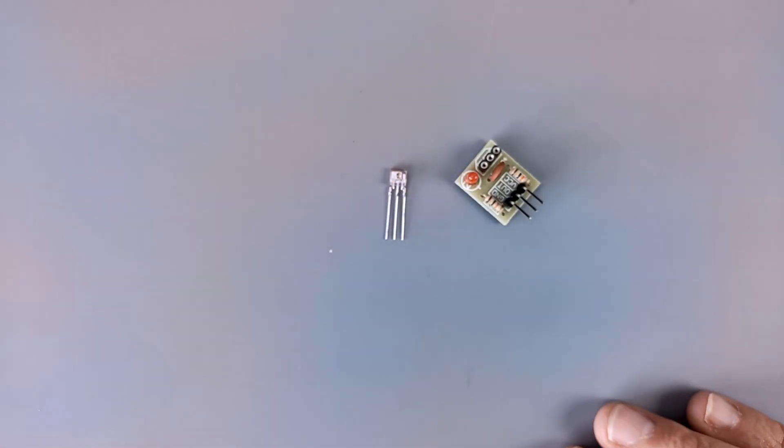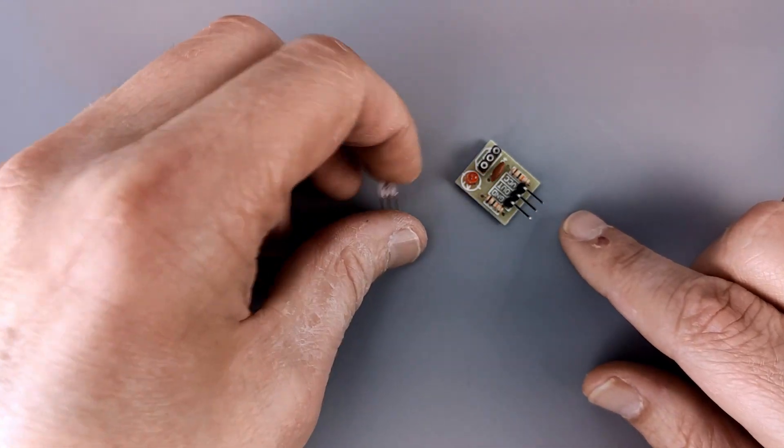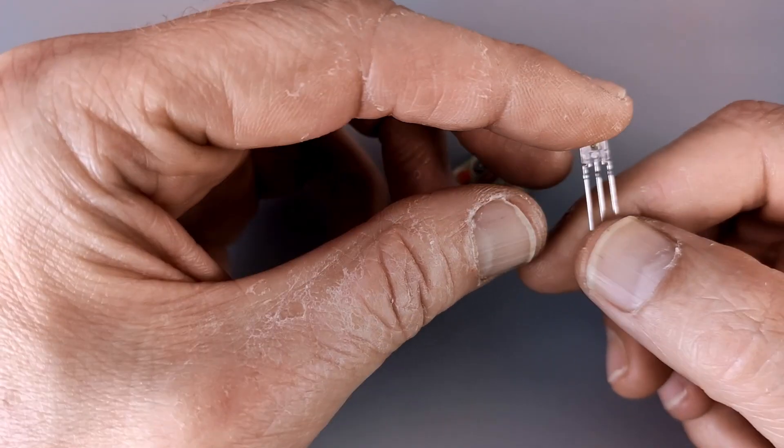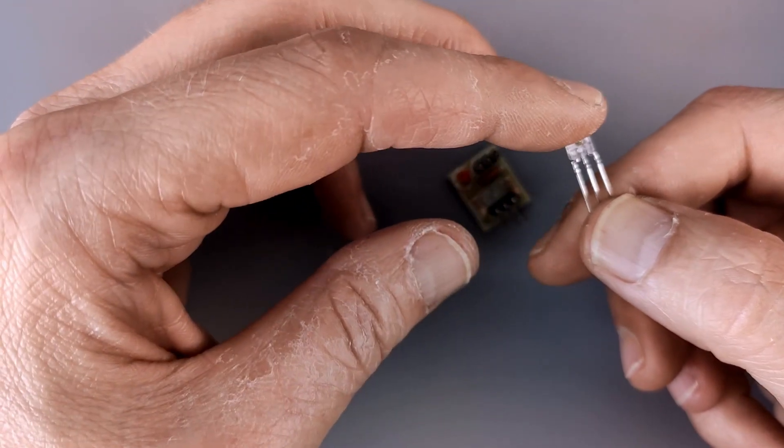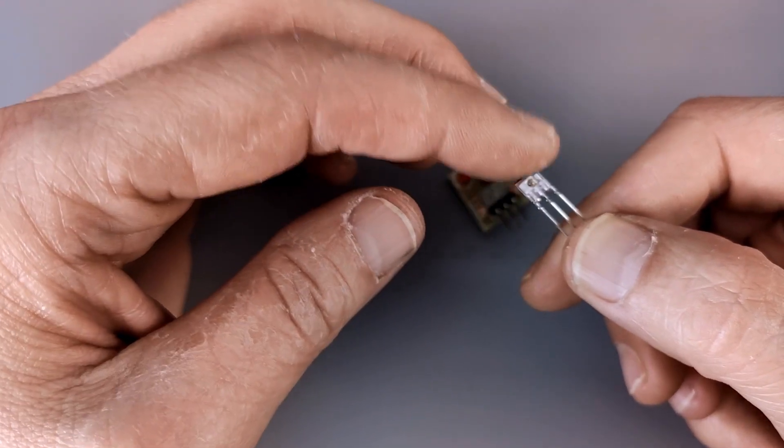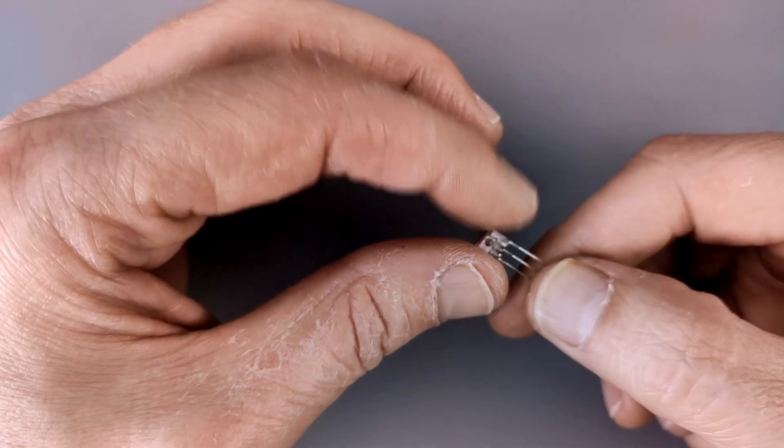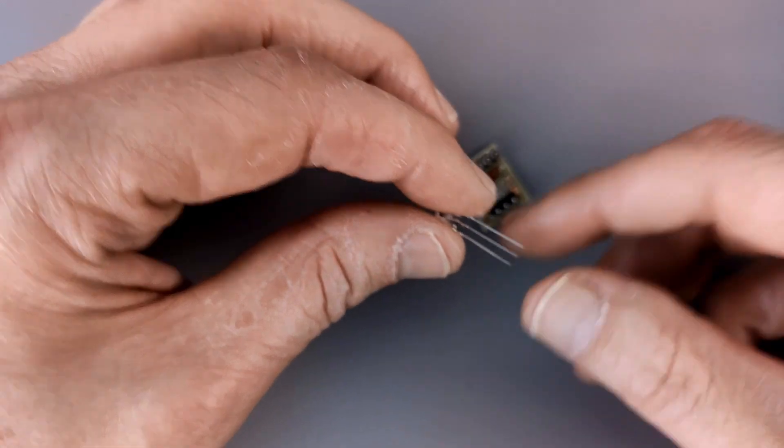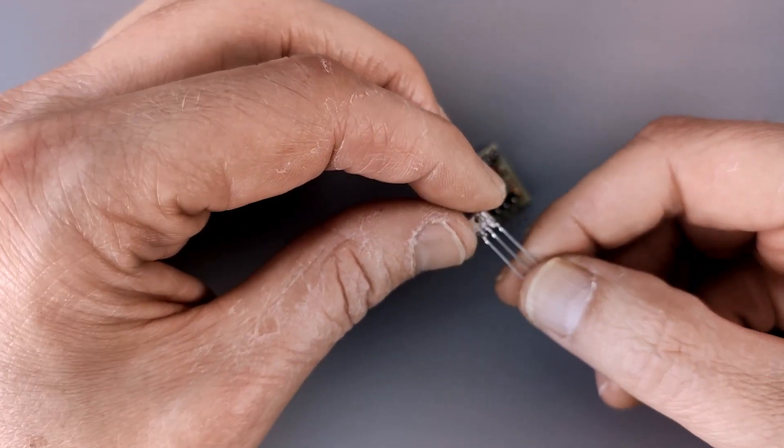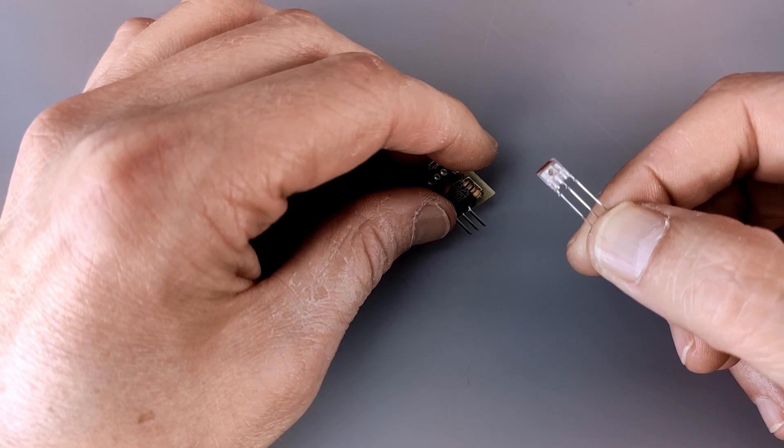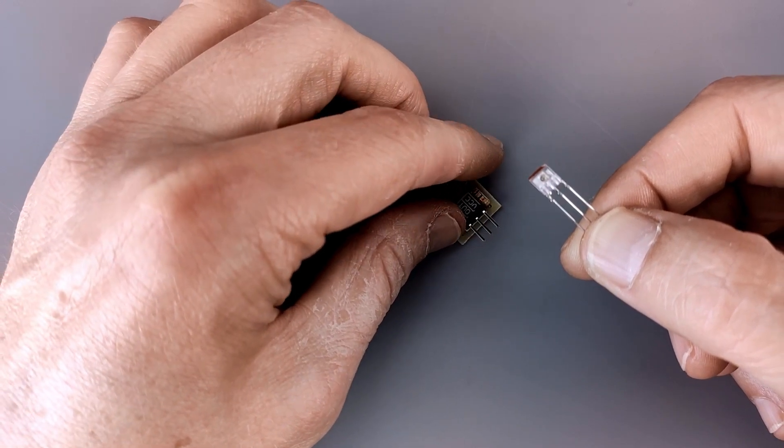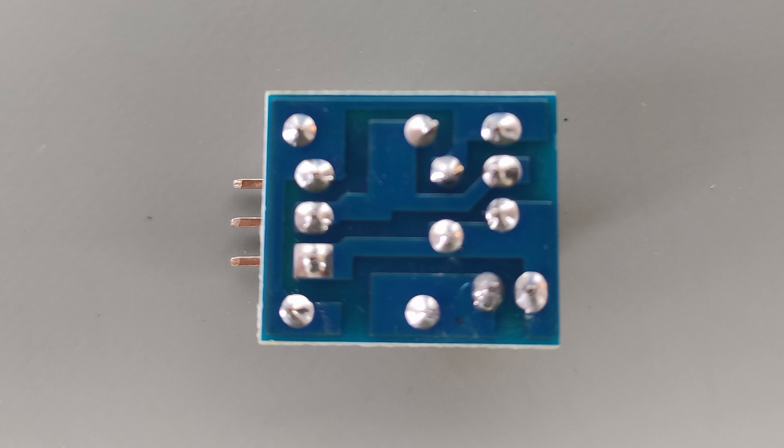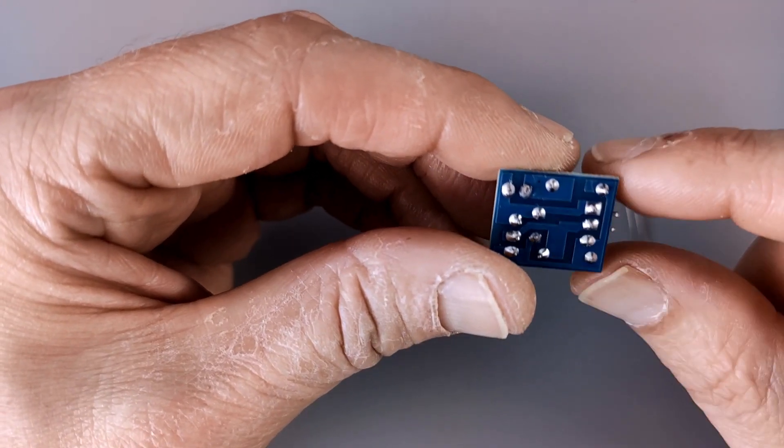On the board there is a part number which says DS18B20, which according to Google is a temperature sensor. Now this is clearly not a temperature sensor, but I couldn't really find what it is. That was one of the two questions I had - what is it and does it work? Well, does it work? I can answer that yes, and I'll show you in a minute.